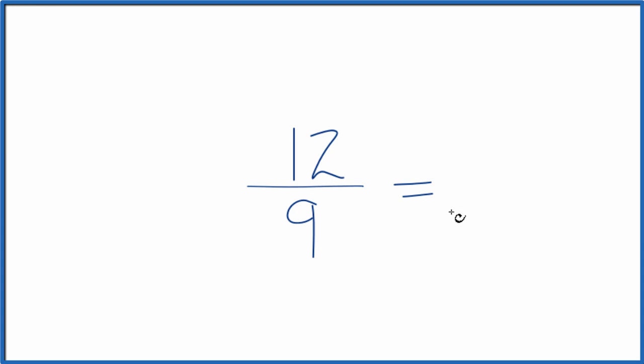To do that, we need to find a common factor, something that goes into 12 and 9. When I look at 12 and 9, these are the factors for 12, and these are the factors for 9. The greatest common factor here is 3.